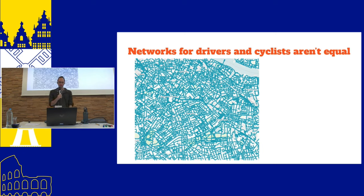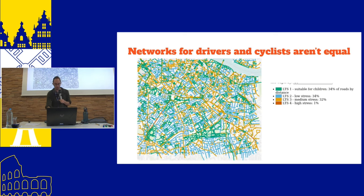So what does OD2NET do? To motivate it: the roads that are safe to drive on and the roads that are safe to cycle on in many places are very much not the same. This is a section of South London — basically all of these roads are safe to drive on. But if you're a cyclist, the picture looks different. These four colors show a level of traffic stress, or LTS, where green roads are very comfortable to cycle — you'd let your kid do it without supervision — and the darker orange-red roads are kind of terrifying, even for confident cyclists.